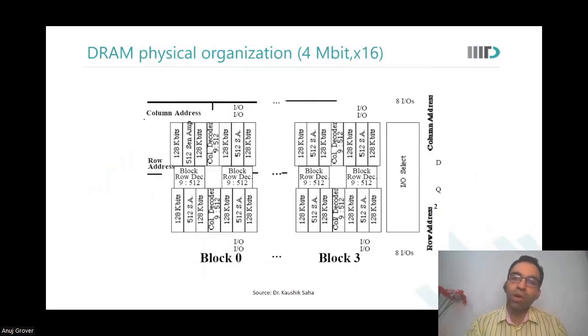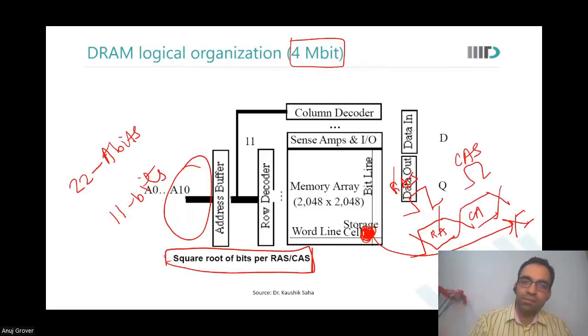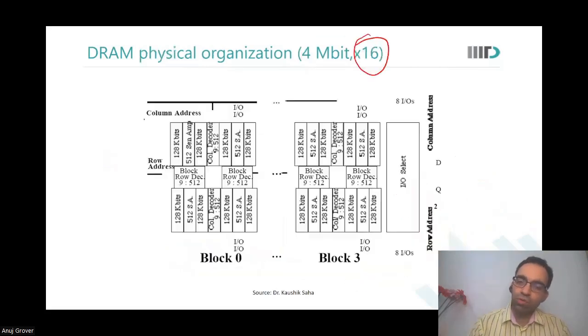So if I want to have a 16 bit DRAM, I will have multiple pages to get to this 16 bit interface. If I call this as a block, let us call this as one array or a block. So one block gives out one bit.